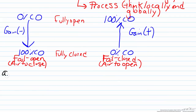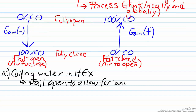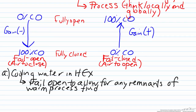Part A is the valve for cooling water in a heat exchanger. If the power were to go out, there could be hot process fluid still going through or remnants left in the heat exchanger. Therefore we would want this valve to fail open, to allow any remnants of the warm process fluid to be cooled, since allowing hot fluid to flow downstream could cause reactions or separations that are not ideal.